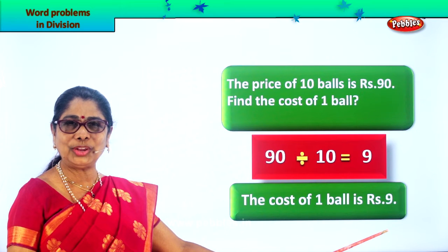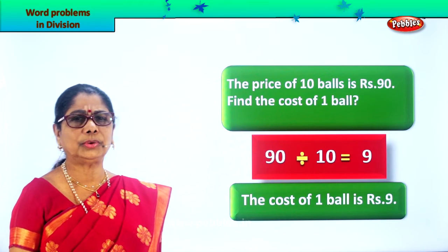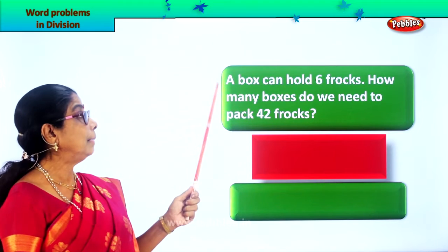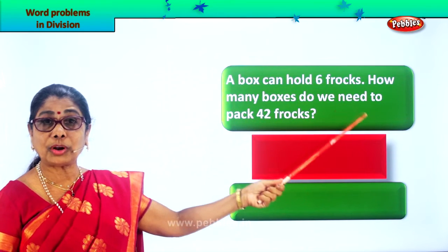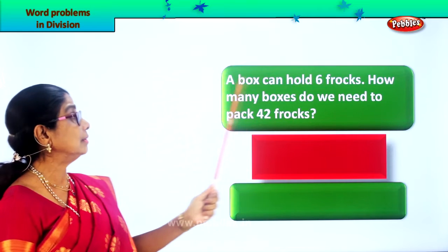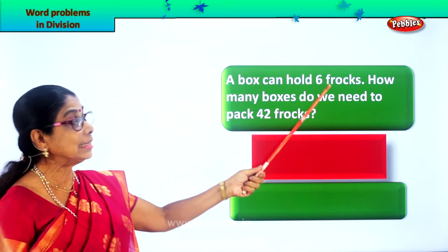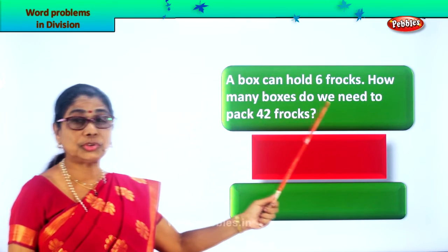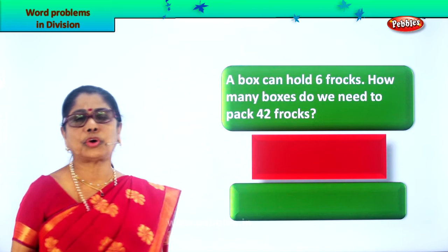Did you enjoy working word problems in division? Shall we look at another word problem? Read carefully: a box can hold 6 frocks. Frocks are nice baby dresses. One box can contain only 6 frocks. How many boxes do we need to pack 42 frocks?